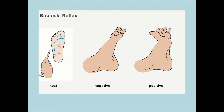There are reflexes that can indicate serious pathology, such as the Babinski response. Using the sharp end of a patella hammer, you draw it up the lateral border of the foot along a specific line and across to the big toe. A negative result — the normal response — is that the big toe flexes to grip the ground. If the big toe extends, that's usually an indicator of serious neurological pathology.